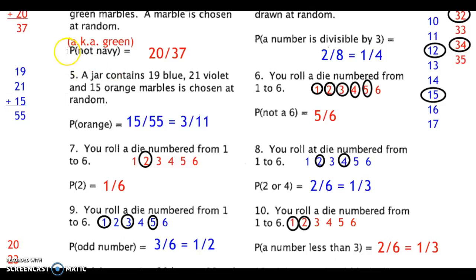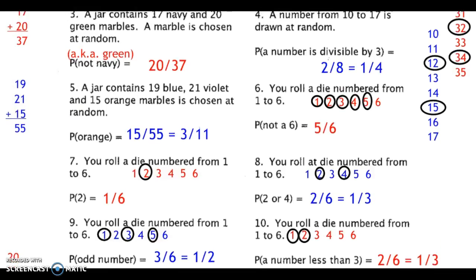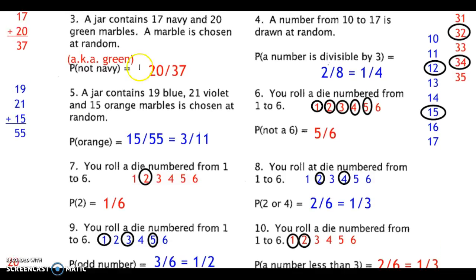Another misconception involves probability of 'not navy.' In this case — that was question number 3 — 'not navy' means green.